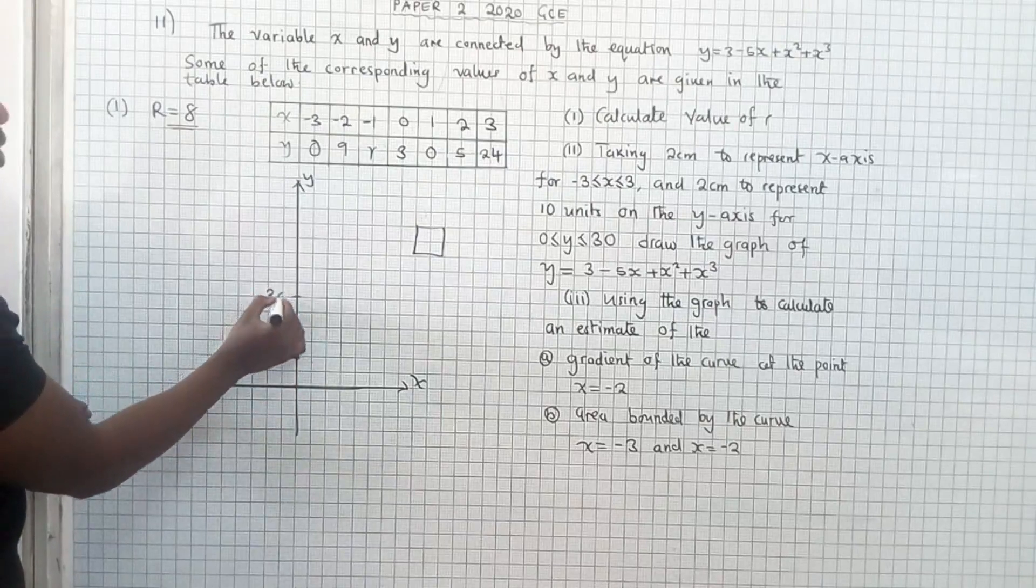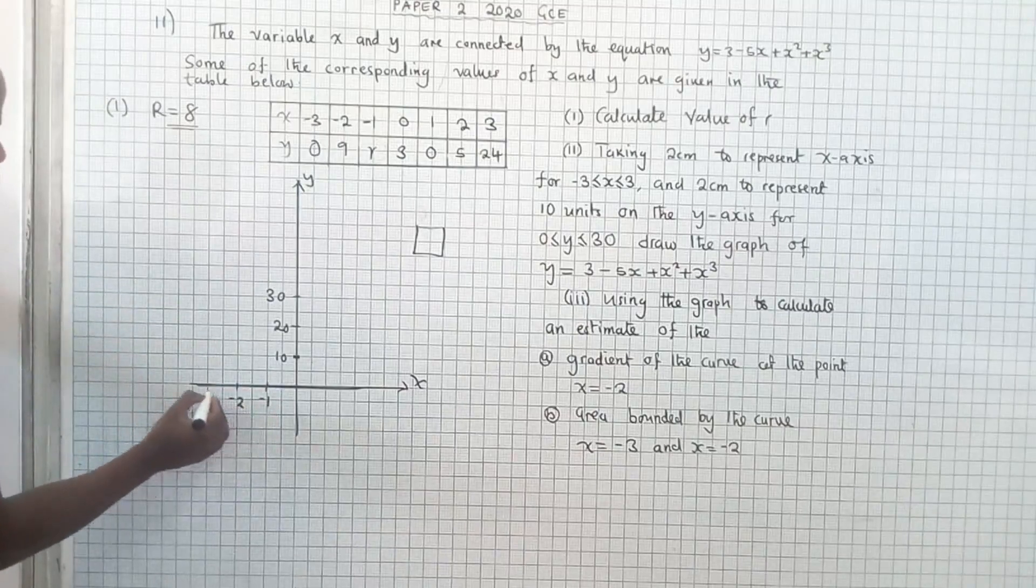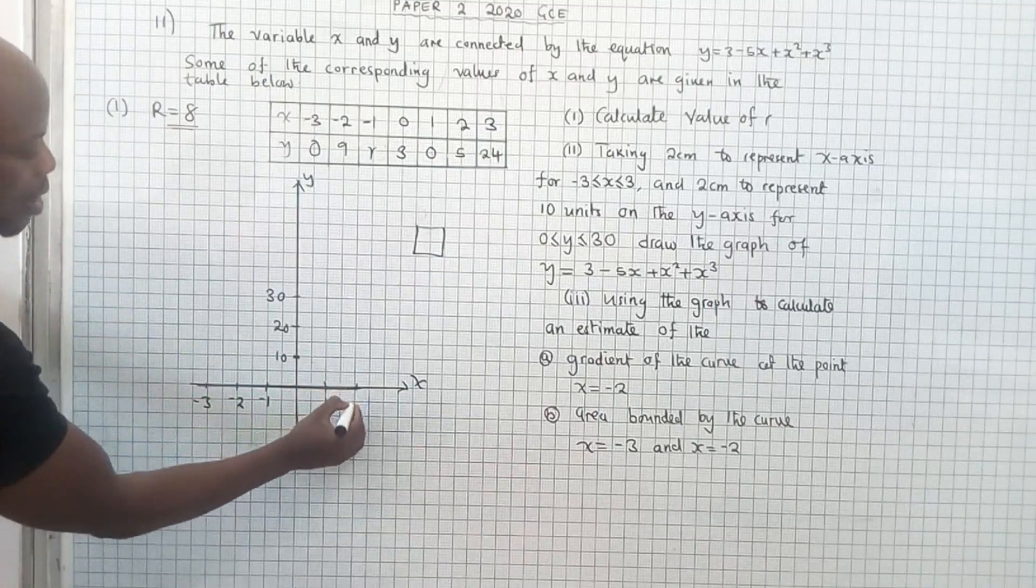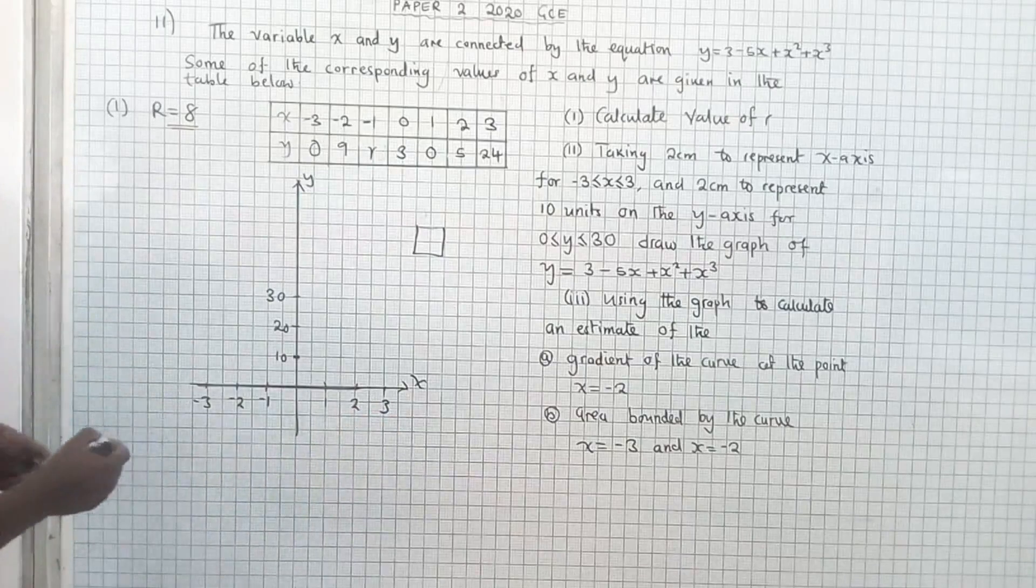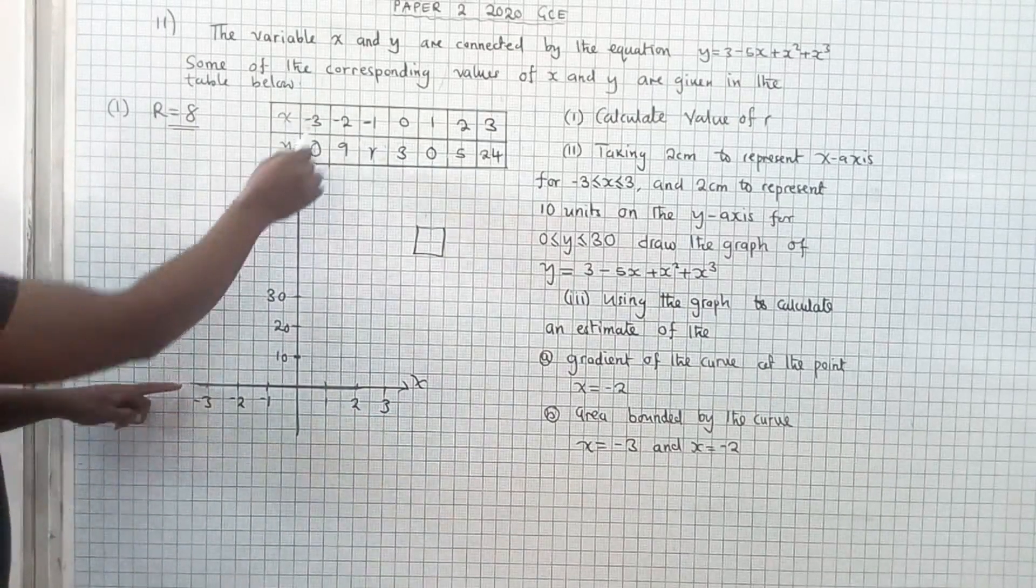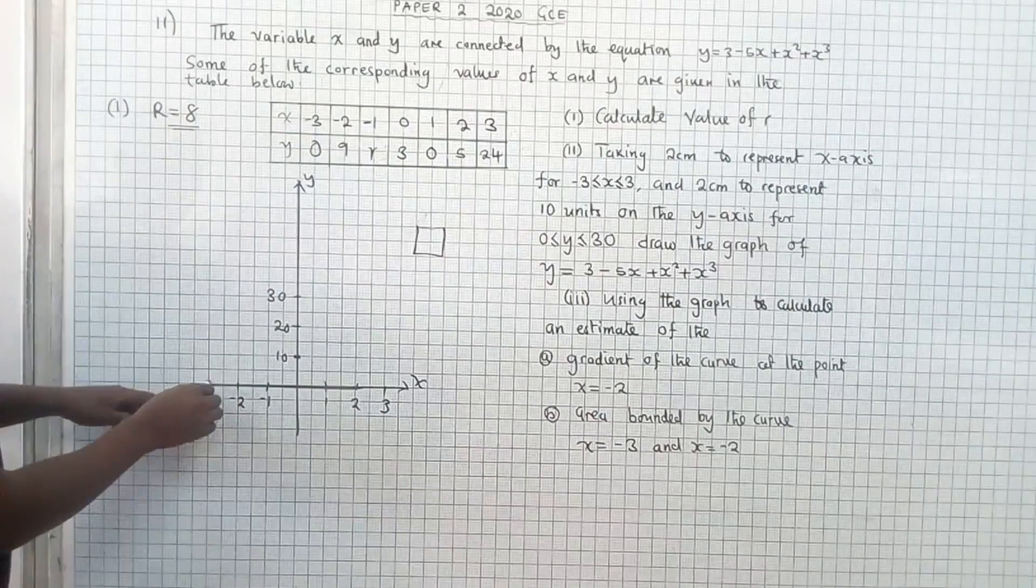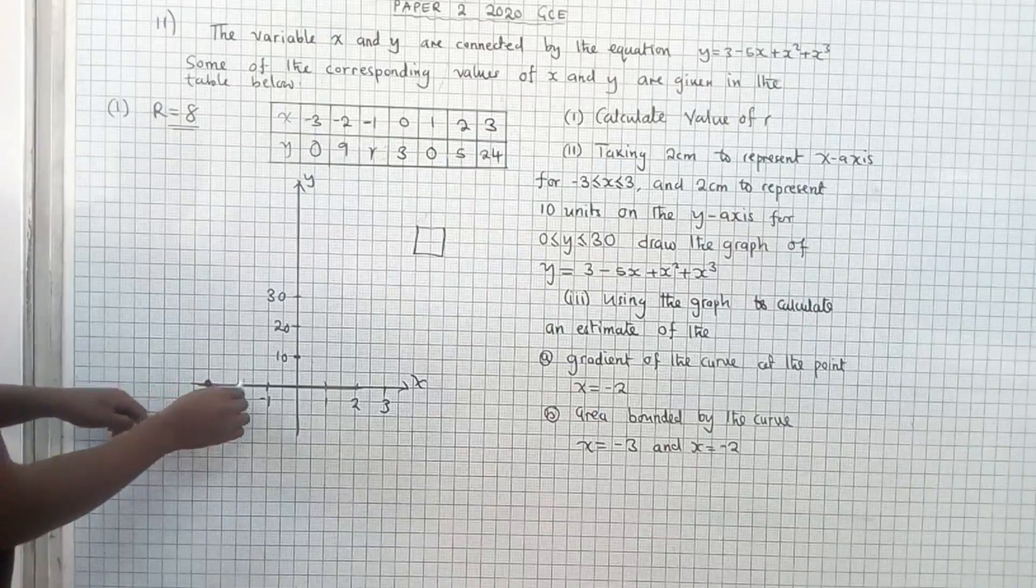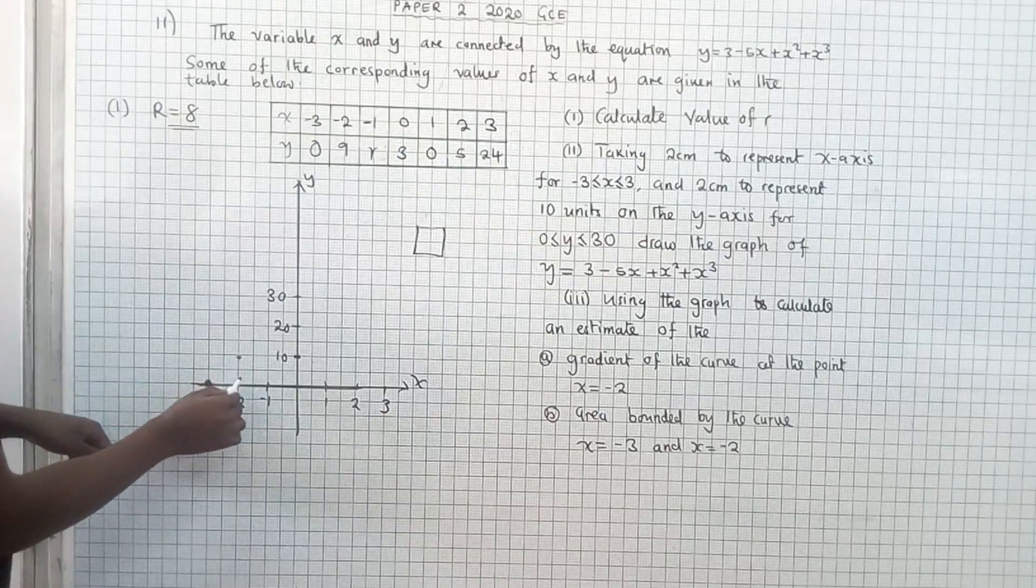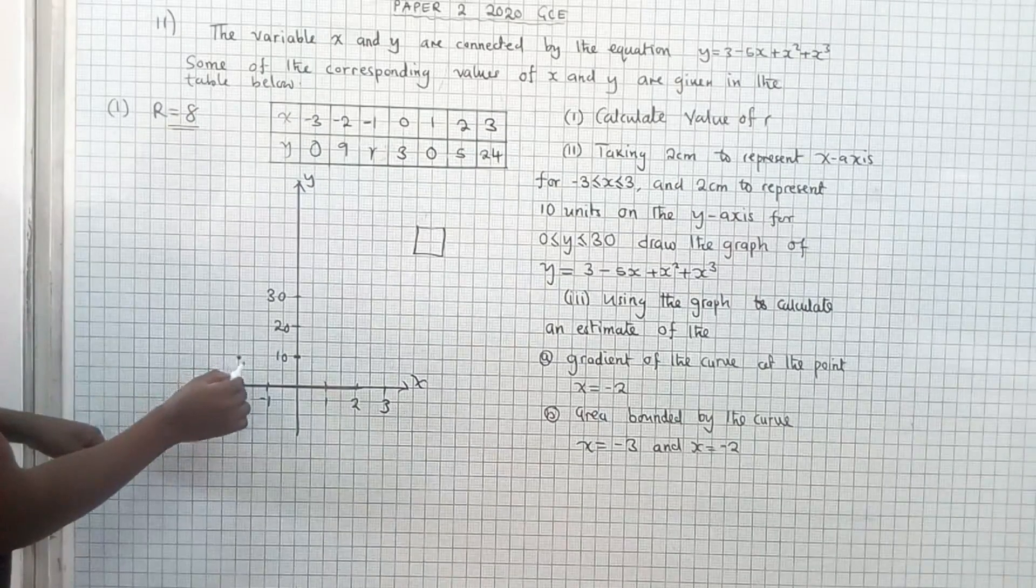20, and my 30 will be here. This side is my negative 1, negative 2, and then my negative 3. This side 1, 2, and then 3. Now I can start plotting the coordinates. The first point negative 3, 0. It's here. Next, negative 2, 9, it's over here. Because these small lines, there are 10 of them up to here. So this is 9.